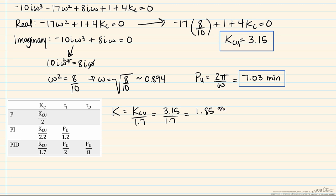Tau i is the ultimate period divided by 2, so this will be 7.03 divided by 2, and that will be 3.515 or 3.52 minutes. And the derivative time will be the ultimate period divided by 8, or 7.03 divided by 8, which is 0.879 minutes.